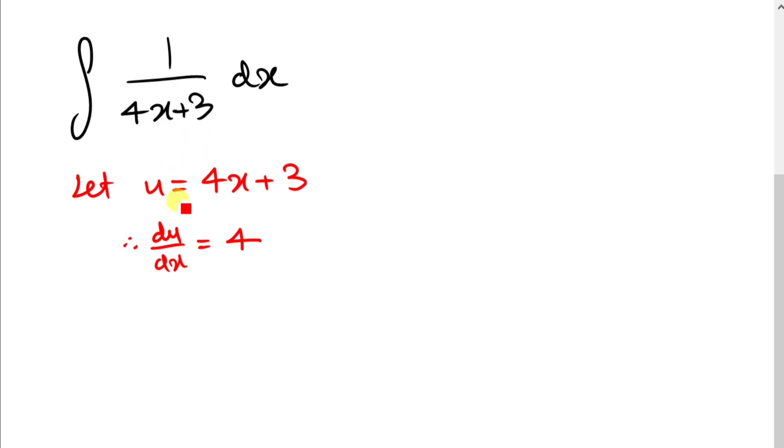Now the cool thing is, all you have to do is make dx a subject. So we can do that by swapping dx and 4 around. So now we're going to have du over 4 equals dx.